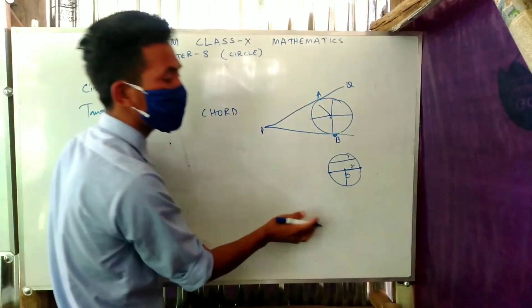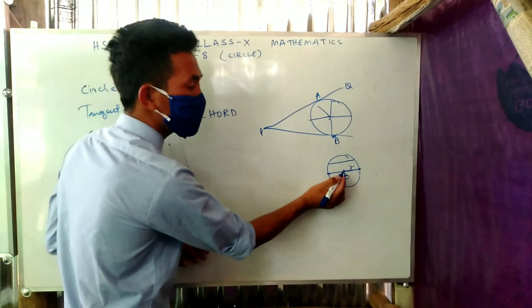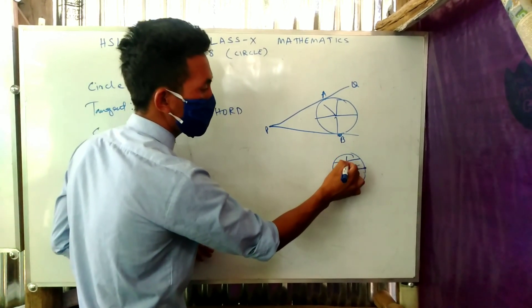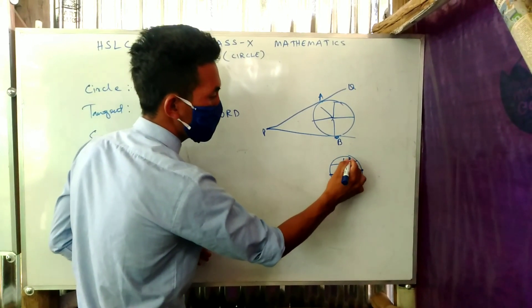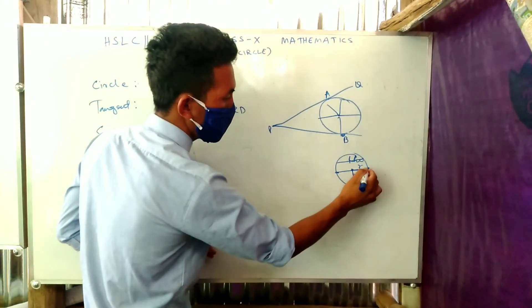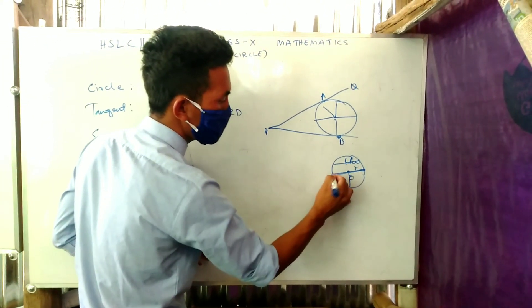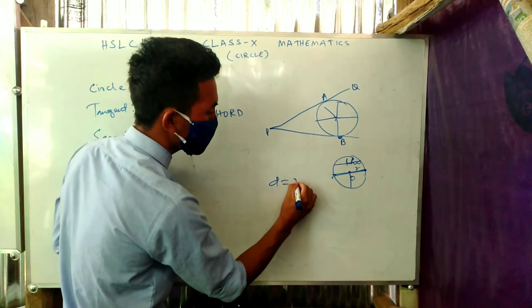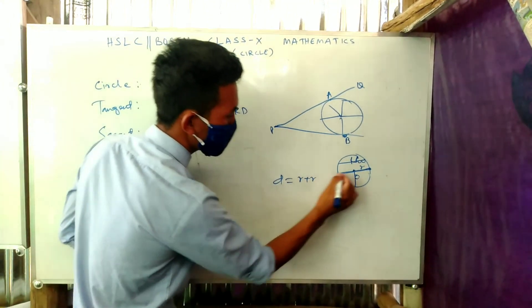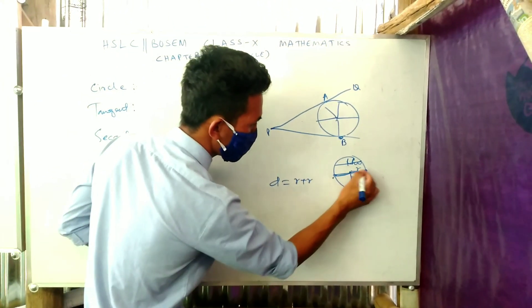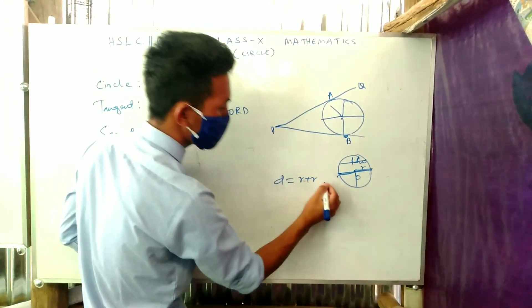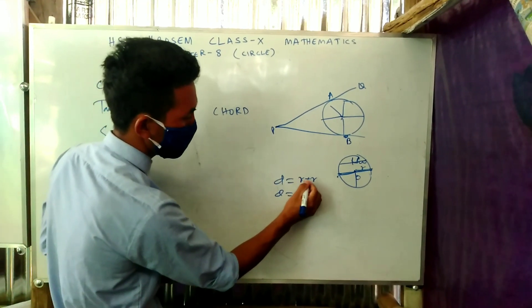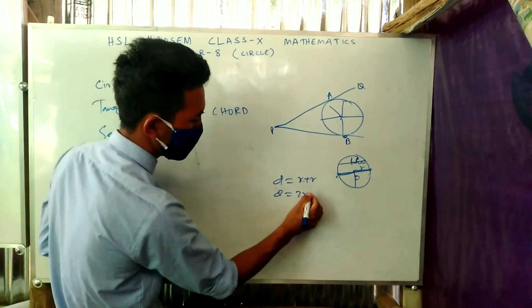A chord does not pass through the center. The diameter passes through the center. The diameter equals radius plus radius, so diameter equals 2R.